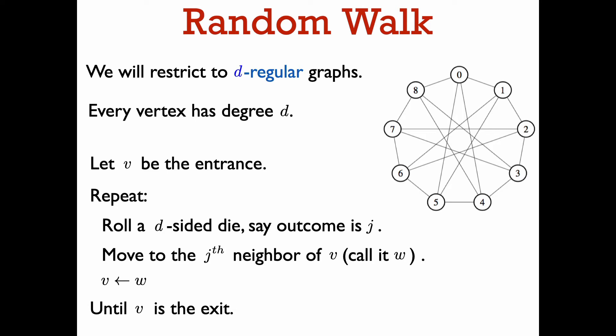Now let's try to get some intuition for why this fact is true. We are going to restrict ourselves to d-regular graphs — that is, graphs where every vertex has exactly d neighbors. In the picture here, we have an example of a four-regular graph. In a random walk on this graph, we repeat the following process until we reach the vertex we are looking for. At a generic step of the walk, when we're at vertex u, we roll a d-sided die. If the outcome is j, then we move to the j-th neighbor of u, and we keep repeating this process.